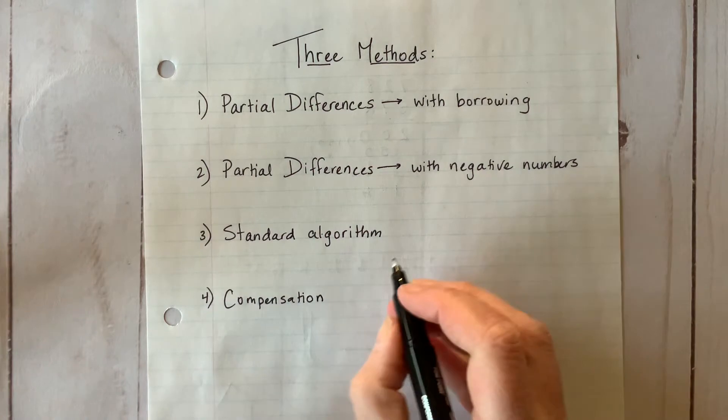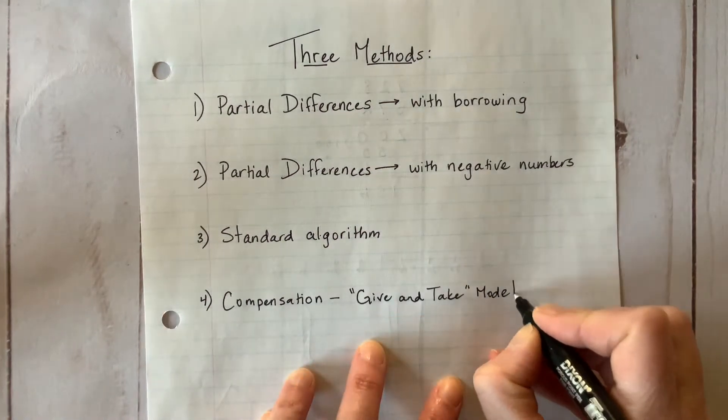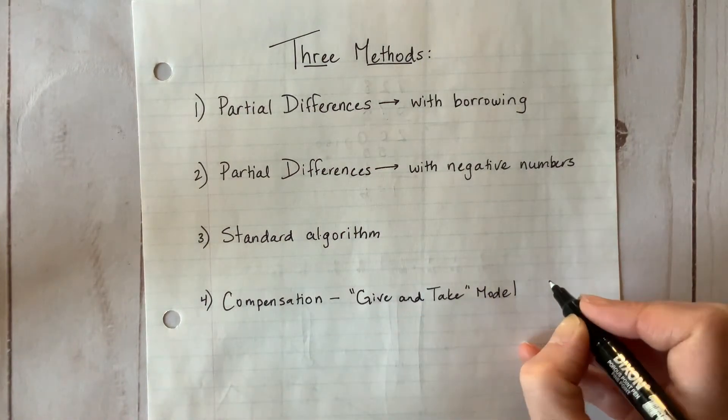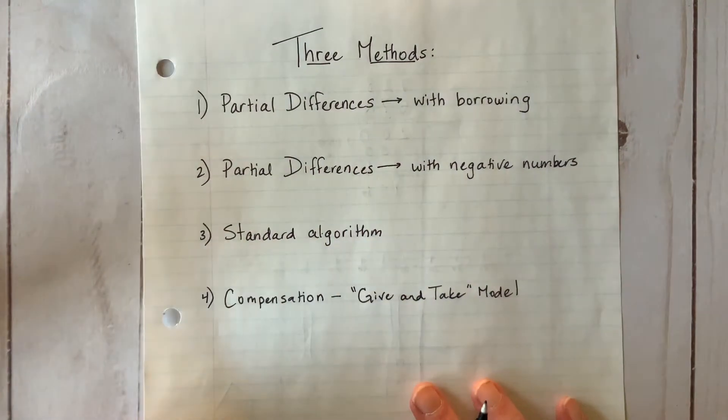Plus I'll show you a new method that can be particularly handy in this situation. It's called the compensation or give-and-take model.